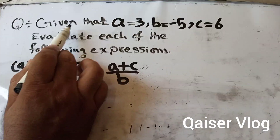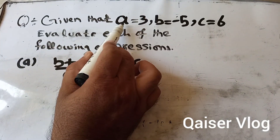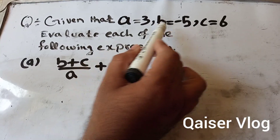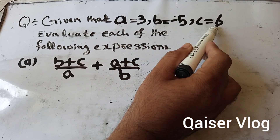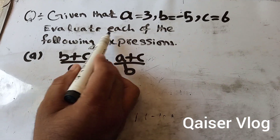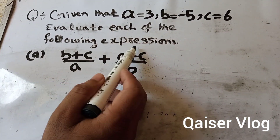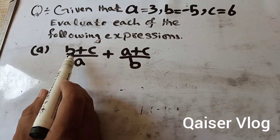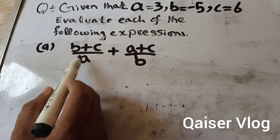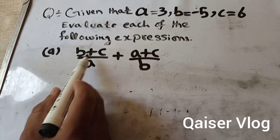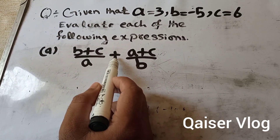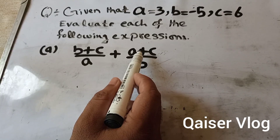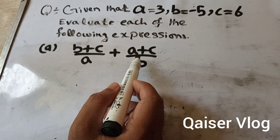Now the next question: given that a = 3, b = -5, and c = 6, evaluate each of the following expressions. The expression is (b + c) divided by a, plus (a + c) divided by b.